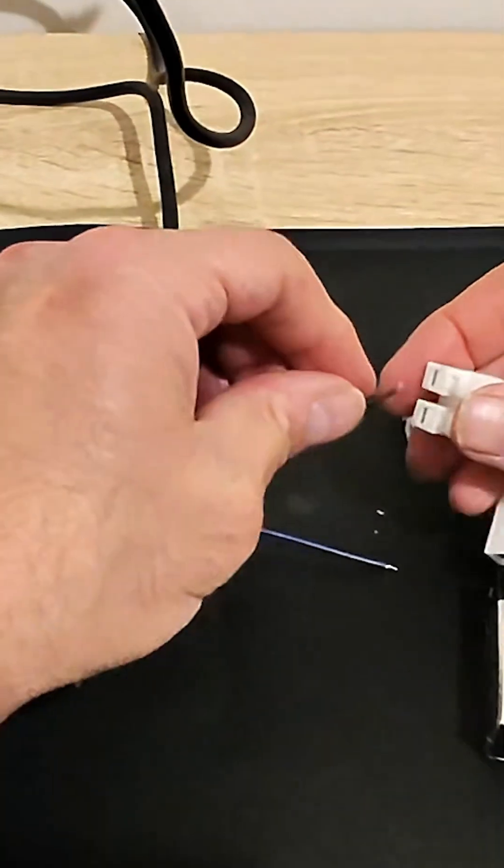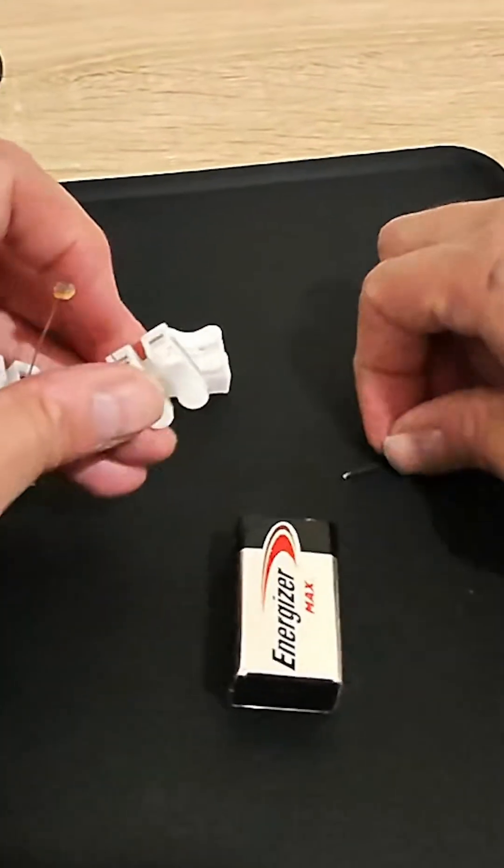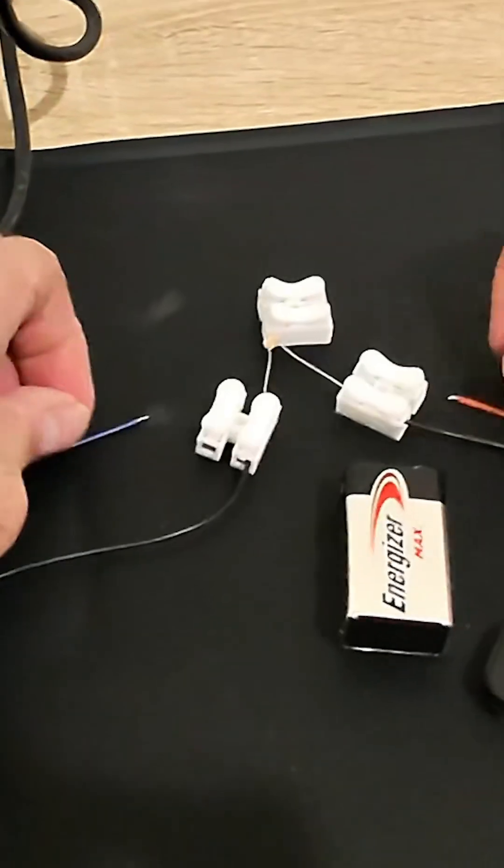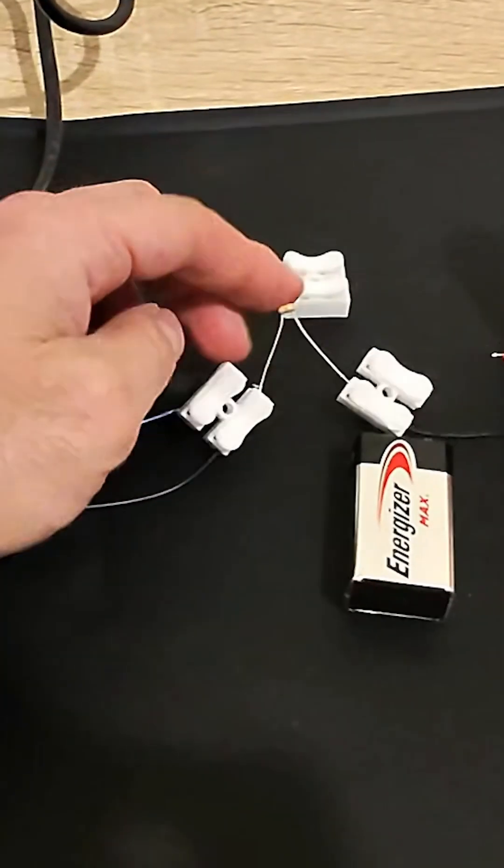Now we're going to take the black wire, which is the negative to the LED, and we're going to connect it to one quick connect. Then we're going to take the other black wire from the battery connector and connect it to one of the quick connects.